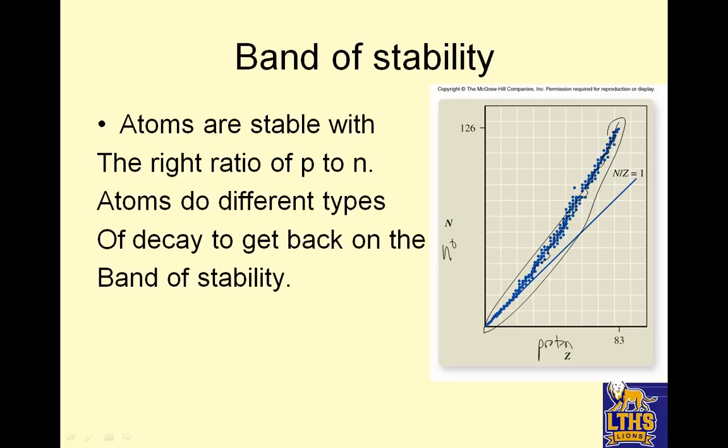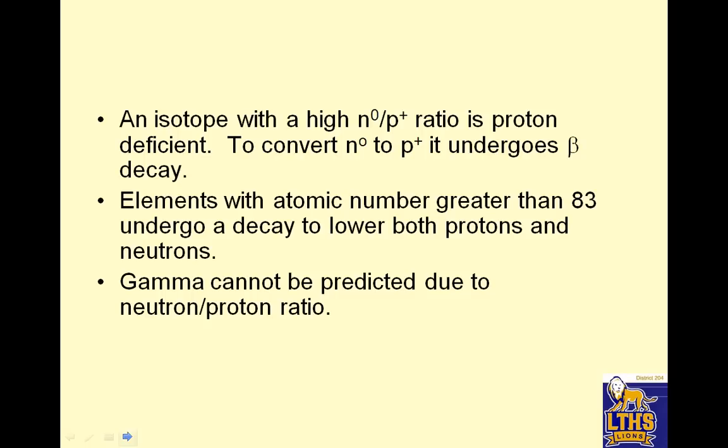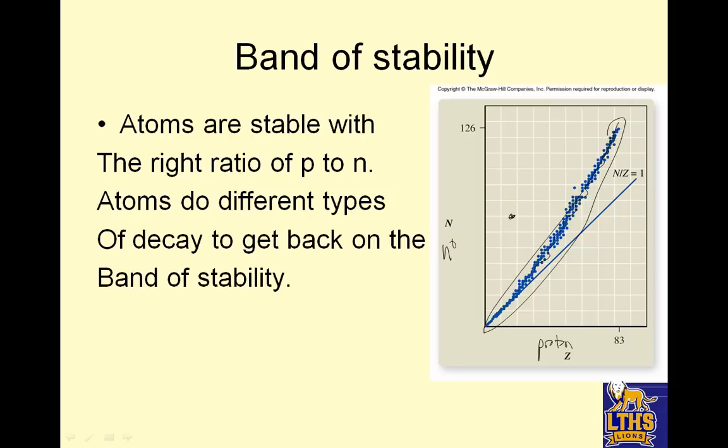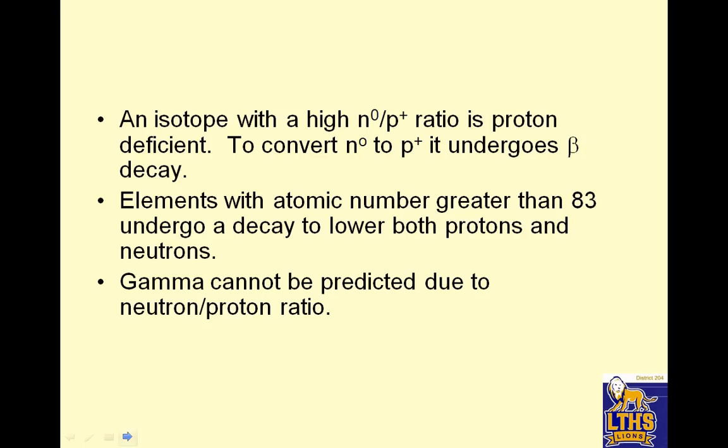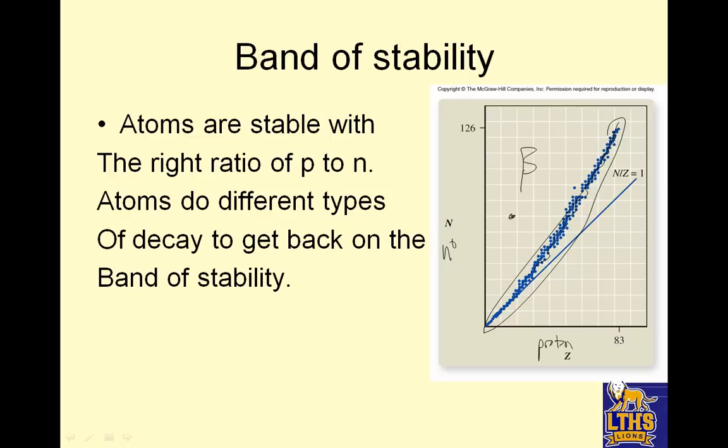Atoms do different types of decay to get back on the band of stability. An isotope with a high neutron to proton ratio is proton deficient. So that means it would be up here. High neutron to proton ratio. To convert neutrons to protons, it undergoes beta decay. So that means this is my beta zone.